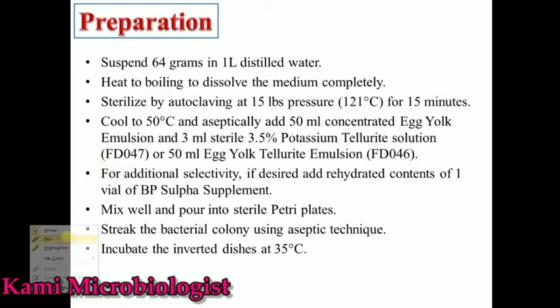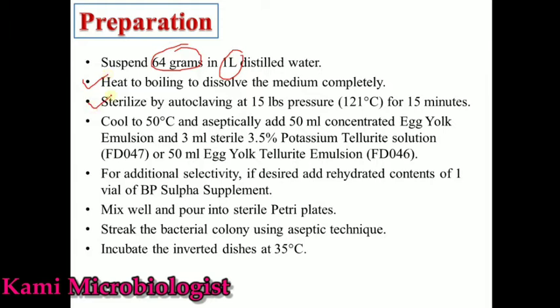To prepare this media, first we take Baird-Parker agar 64 grams into one liter. After that we heat to boil to dissolve the media completely. Then we sterilize it at 15 psi pressure at 121 degrees Celsius for 15 minutes. After that we cool it down and then add 50 ml of egg yolk emulsion and 3 ml of sterilized 3.5% potassium tellurite solution.